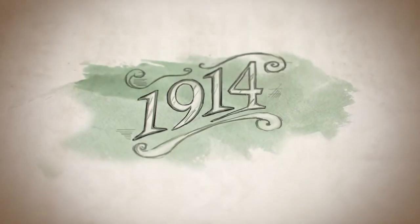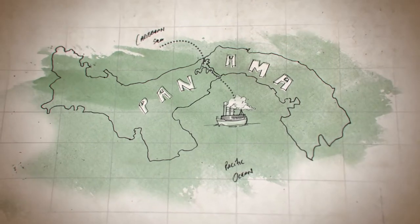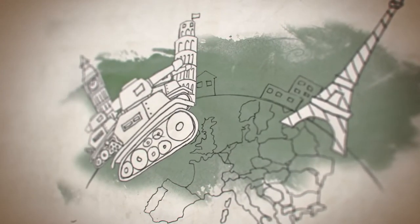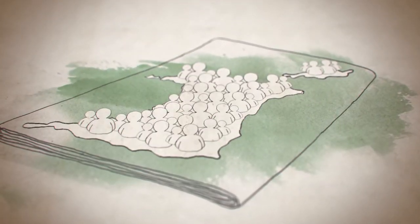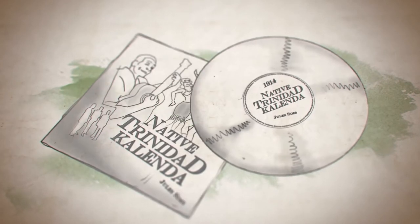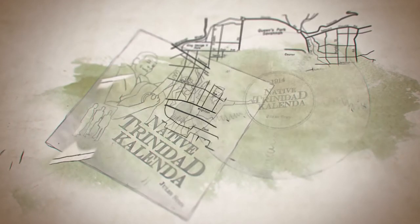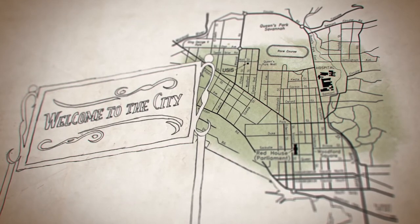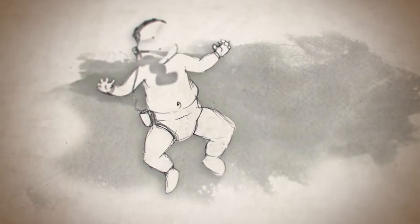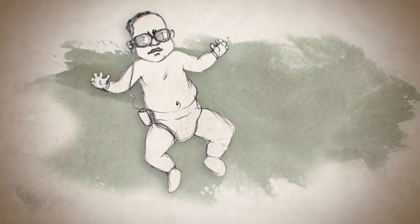This is 1914. The first steamboat passes through the Panama Canal. World War I breaks out in Europe. The population of Trinidad and Tobago is just 350,000. The first calypso recording is made. Port of Spain officially becomes a city. Eric Eustace Williams is just three years old.